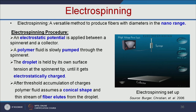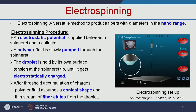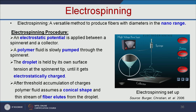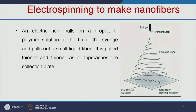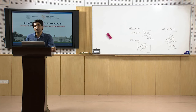The same principle applies to the electrospinning setup. It is a versatile method to produce fibers with diameters in the nanometer range. A syringe is connected to a high voltage power supply. When high voltage is applied between the spinneret and collector, a polymer fluid is slowly pumped through the spinneret. The droplet is held by its own surface tension until it gets electrostatically charged. After a threshold accumulation of charges, the polymer assumes a conical shape called the Taylor cone. A thin stream of fiber ejects from the droplet to form a nanofiber. We can easily control nanofiber dimension by adjusting polymer solution viscosity and the distance between the spinneret and collector.